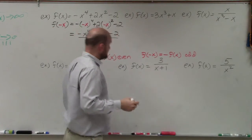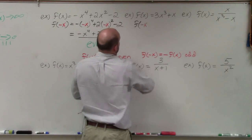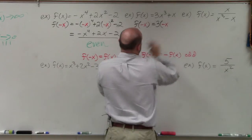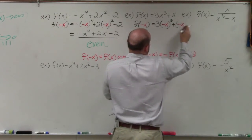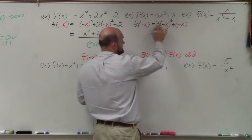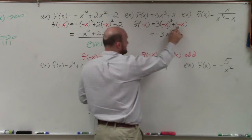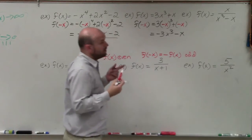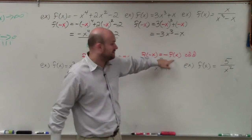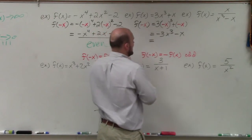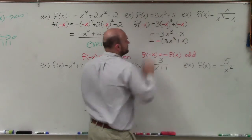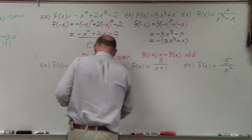Now let's go to the next example. Again, we're going to evaluate for f of negative x. When I plug in negative x, I have 3 times negative x raised to the third power plus negative x. When you have a negative number or variable raised to an odd power, it becomes negative. So this becomes negative x cubed, and 3 times that is negative 3x cubed. Negative x stays as negative x. So we go from positive 3x cubed plus x to negative 3x cubed minus x. That is the negation — if you factor out the negative, you're left with 3x cubed plus x. So the answer is odd.